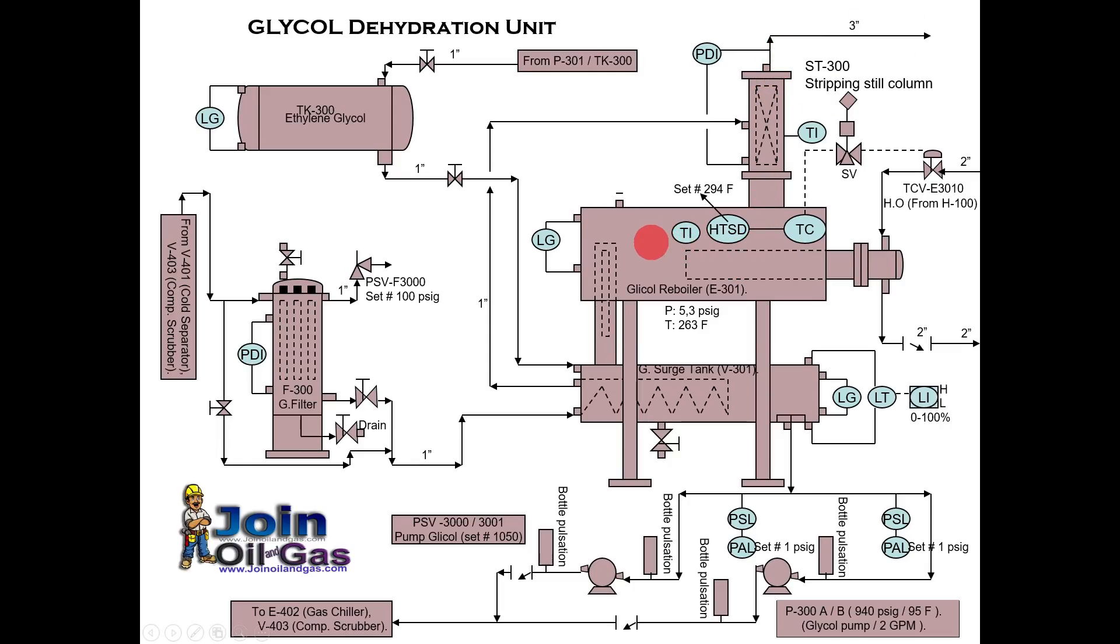So the glycol then will down flow to this surge tank vessel. Because it came from the top it is hot enough so it will exchange the heat with the incoming flow of the glycol. Then once all these particles are removed and the glycol is regenerated, now this is the outlet.